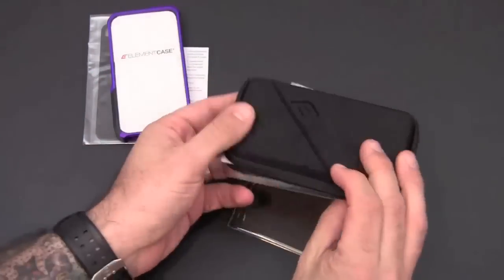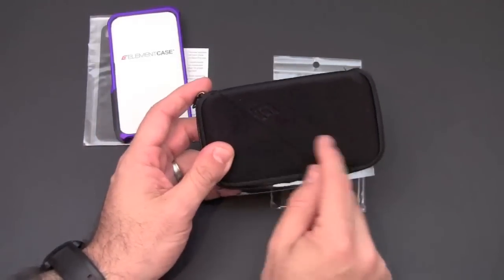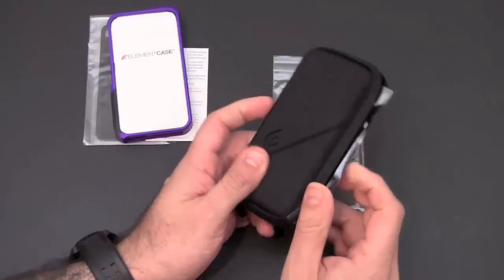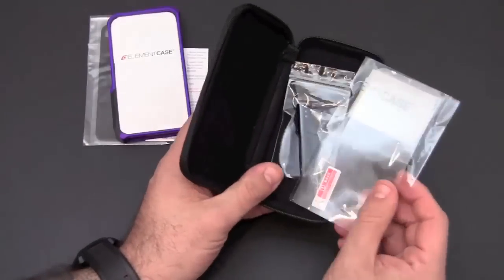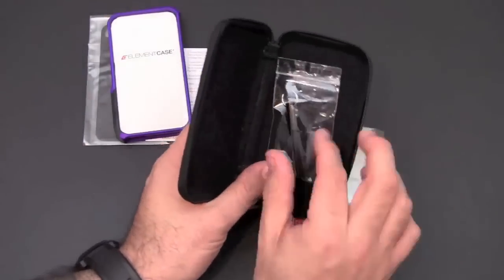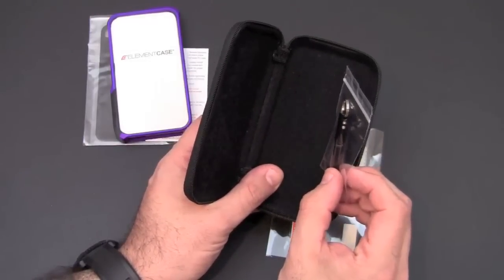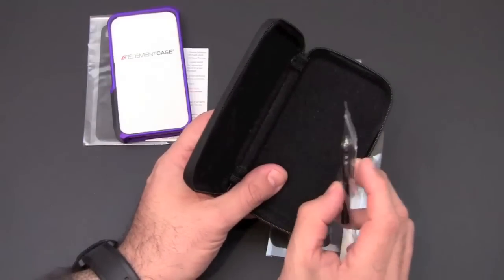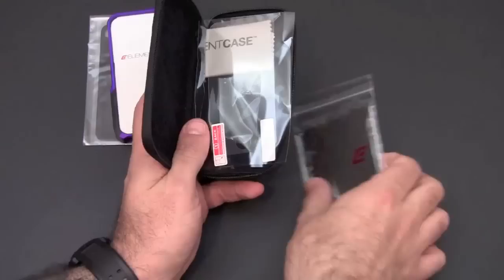So this is the transit kit that you can add to your element case order for $10. It includes this neoprene pouch which is a zipper closure that you can use to protect the case and your phone when it's inside. That also gives you the front screen protector with a cleaning cloth and the speed wrench that you can use to put the case on and take it off. When you're out and about you can put this thing on your keychain and it also has two extra screws in there should you lose any of the ones that are already pre-installed.